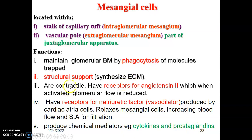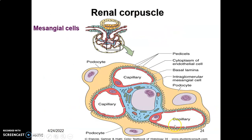To summarize: mesangial cells phagocytose molecules trapped in the glomerulus, synthesize extracellular matrix for structural support, have receptors for angiotensin II causing reduction in glomerular flow when contracted, and have receptors for atrial natriuretic factor produced by the heart's atrial cells — when they relax, they vasodilate, increasing blood flow into the glomerulus and the surface area for filtration. Mesangial cells also produce cytokines and prostaglandins. They can be found within the glomerulus and also at the vascular pole.